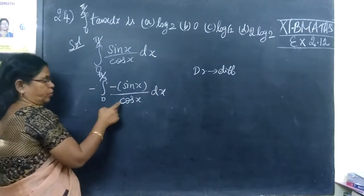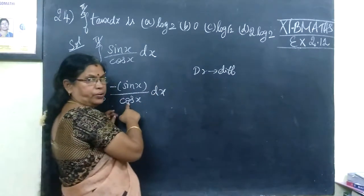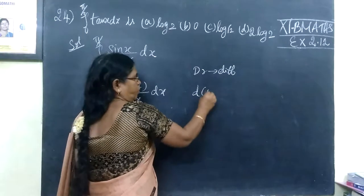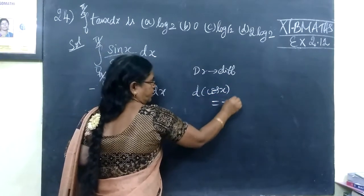If there is cos x, just differentiate. The differentiation of cos x is minus sin x.